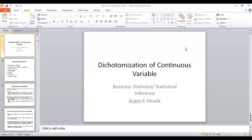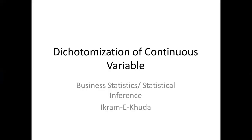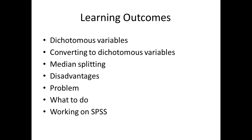Welcome students. This is one of the lectures from the series on topics in business statistics and statistical inference. In this lecture we'll be talking about the dichotomization of continuous variables. The learning outcomes include: dichotomous variables, converting to dichotomous variables, median splitting, its disadvantages, what to do, and working on SPSS.